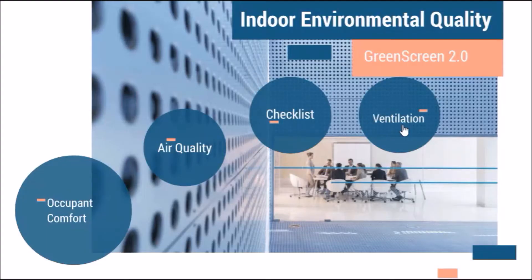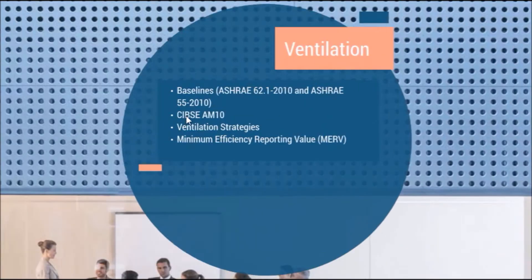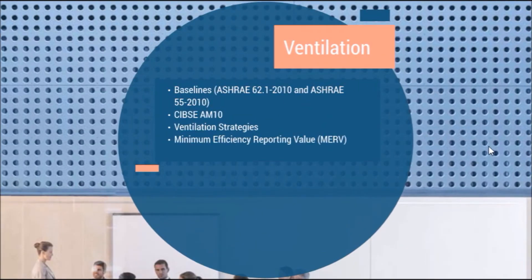Let's head into ventilation strategies first. This is the first step usually — it's about air exchange, introducing fresh air into the building. This is measured in cubic feet per minute. Building codes usually require 15 to 20 cubic feet per minute per occupant. Our baseline is established from these standards.